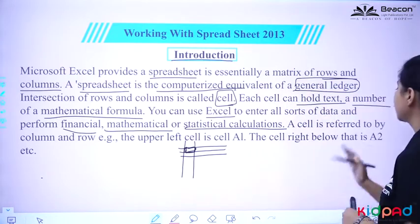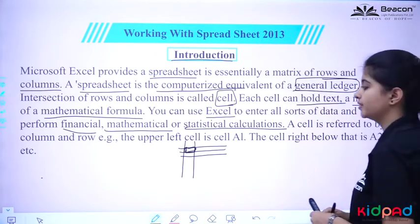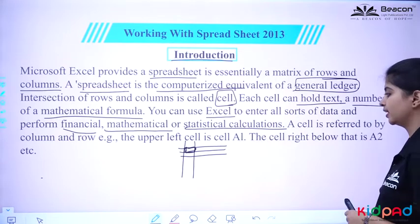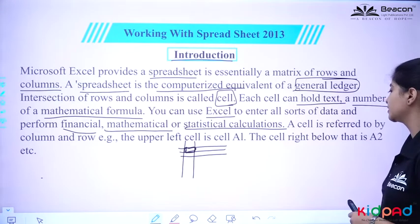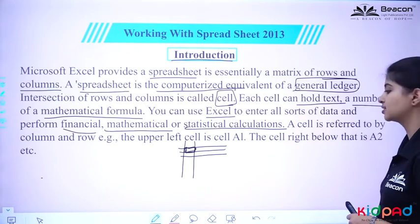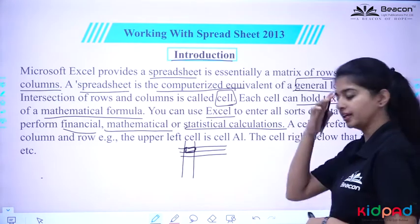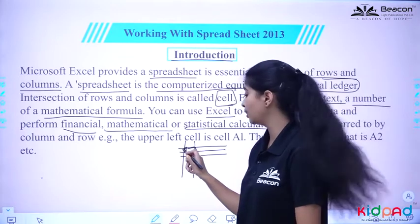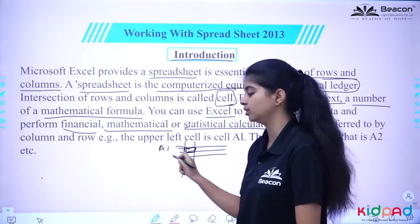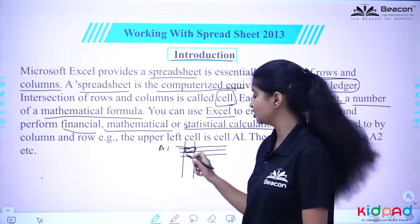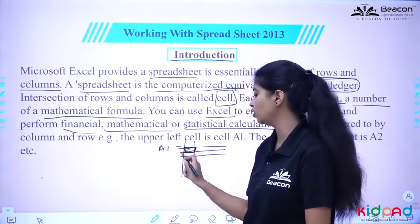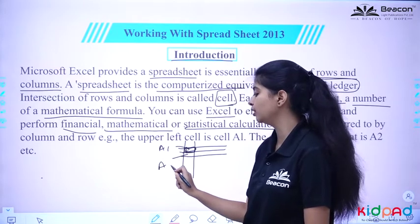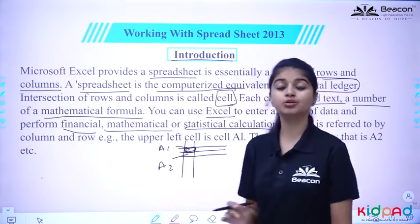A cell is referred to by its column and row. For example, the upper-left cell is cell A1. The cell right below it is called A2. Suppose this is our cell and its name is A1, so the next cell below will be called A2.